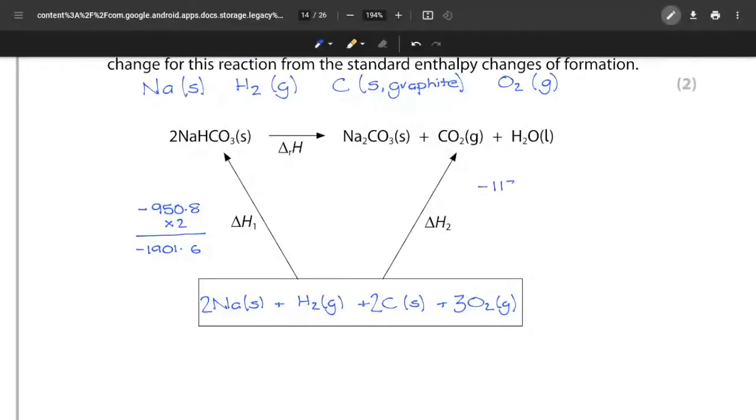For delta H2, I need to add the values for sodium carbonate, carbon dioxide, and water. So I'm going to take them all from this table here: the minus 1130.7, minus 393.5, and minus 285.8. I'm just going to label them all at the side here, and of course I can add them all together and that gives me a value of minus 1810.0.